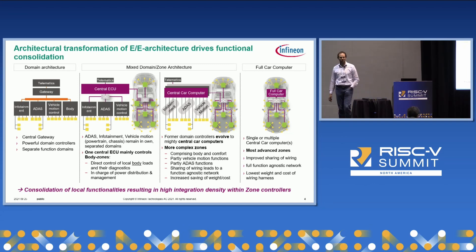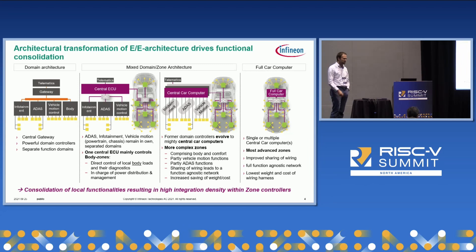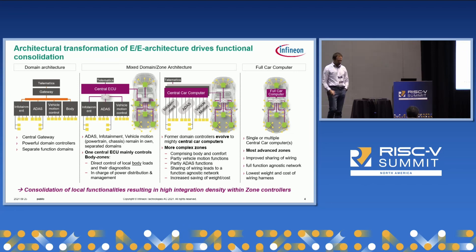This was formerly, before electric vehicles emerged, mostly classically called powertrain, then body applications. The next intermediate step is essentially to go to a central ECU, which is a mixed domain zone architecture, where there is one central ECU which mainly controls the body zones.